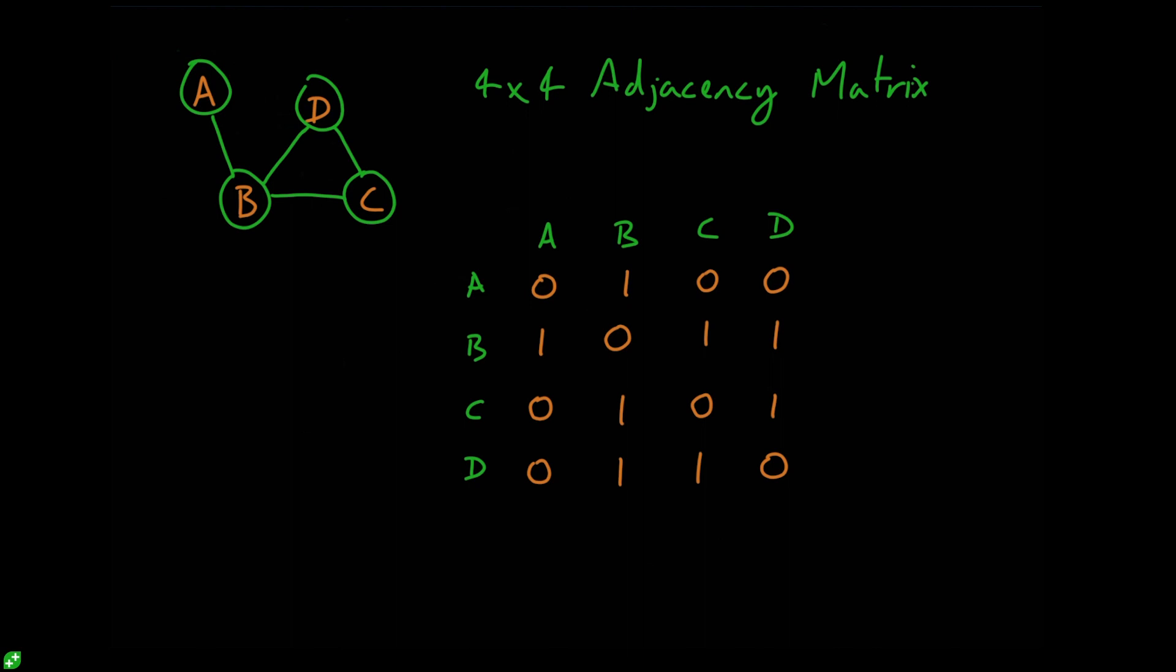So what happens if we do add some direction to our graph? Well, let's add some directions in. So we're going to say this can only go this way and this can only go this way. And we'll leave the others as they are for now. So if we adjust our matrix accordingly, we can say that A still only connects to B, so that first row is fine. B now doesn't connect to A, so this is going to be zero. B still connects to D and C, so the rest of that row is fine. C still connects exactly the same to B and D, but D now only connects to B because it can no longer flow backwards along to C. So now if we draw a diagonal line down here, we'll notice that we're no longer symmetrical. There's a difference here and there's a difference here. So if we were to transpose this matrix, we'd end up with this result. So let's undo that transposition.